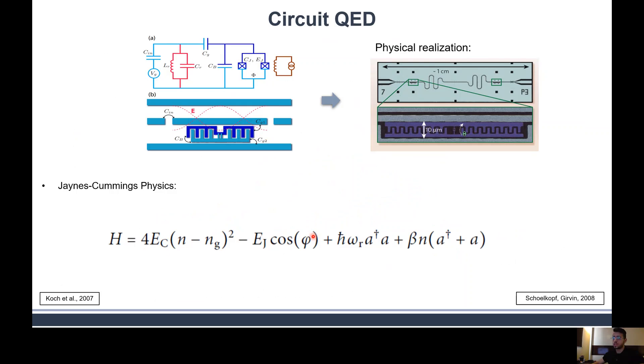The system can be described by the Jaynes-Cummings Hamiltonian, which has three interaction terms: the qubit term, the cavity resonator term, and the coupling, which is a capacitive coupling between the resonator and cavity.